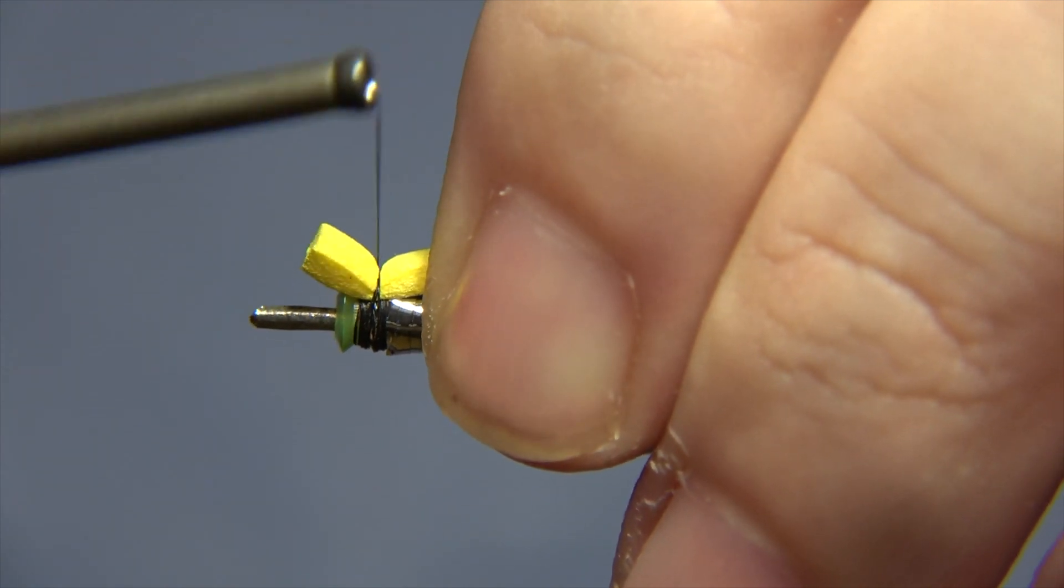When we are done with that the tube is basically ready. Of course you have to remember to put the varnish on the head of the fly or at least on the knot.